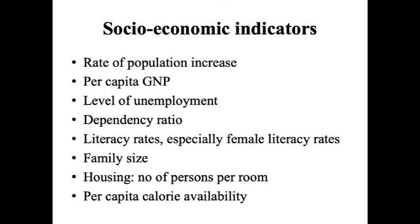Socioeconomic indicators include the rate of population growth, per capita GNP (gross national product), level of unemployment, dependency ratio, literacy rates especially female literacy rates, family size, housing and number of persons per room, and per capita calorie availability.